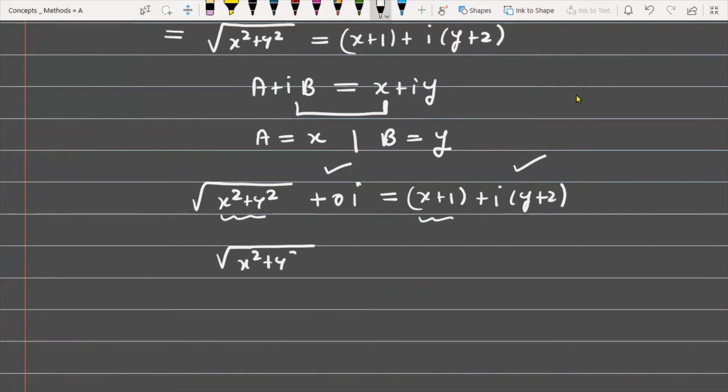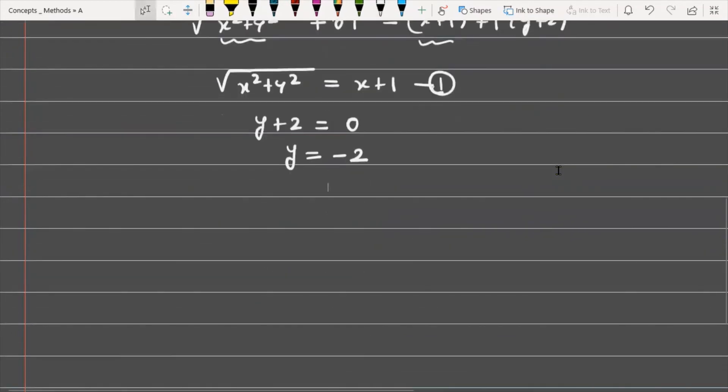From here, √(x² + y²) = x + 1 is the first equation. For y + 2, this value you get is zero. From here you will get the value of y, which is -2.